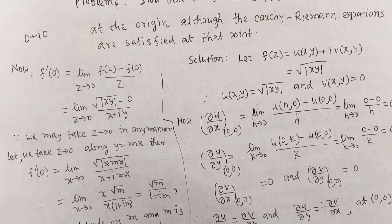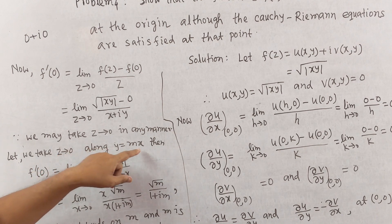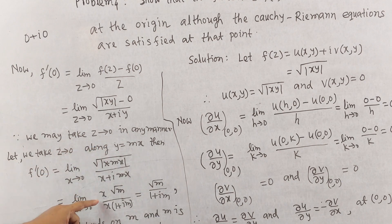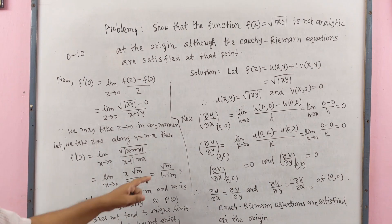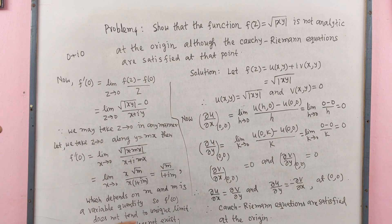We take z → 0 along y = mx. Substituting y = mx: √|x·mx| / (x + imx) = √(m·x²) / (x(1 + im)) = x√m / (x(1 + im)) = √m / (1 + im). This result depends on m, which is variable. Therefore f'(0) does not tend to a unique limit, so f'(0) does not exist and f(z) = √|xy| is not analytic at the origin.